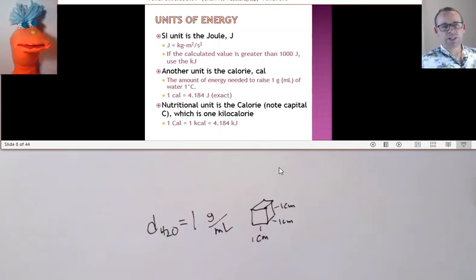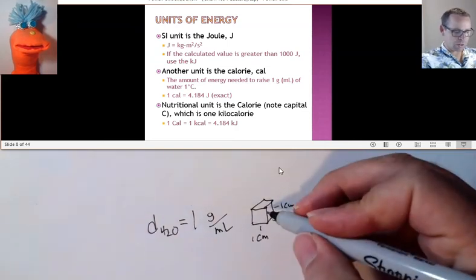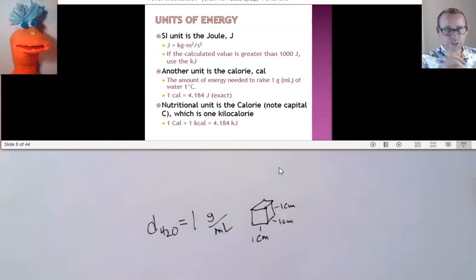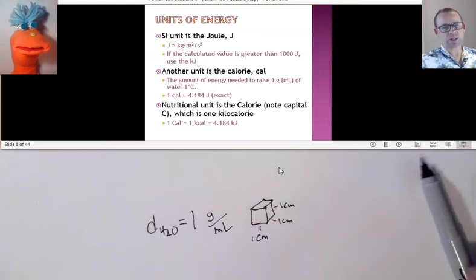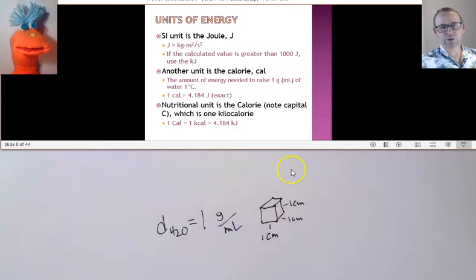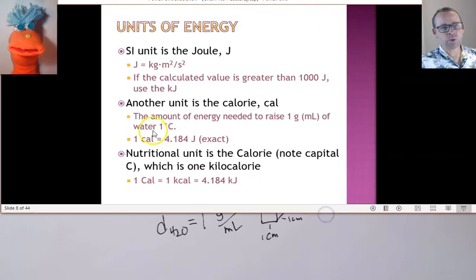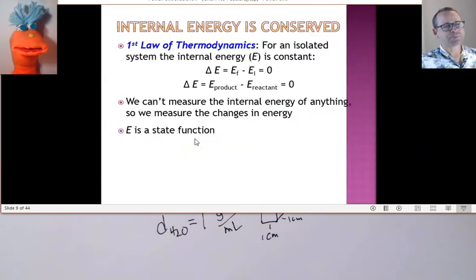Therefore, the amount of energy needed to raise this one gram of water just one degree Celsius. So, from maybe one to two. Or from 25 to 26. Just need to raise it one degree Celsius. That is what the definition of a calorie is. And that in terms of joules is 4.184 joules.